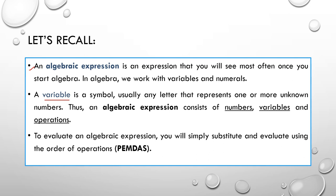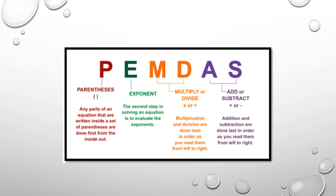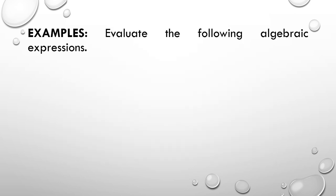What does the acronym PEMDAS mean? P stands for parenthesis, E for exponent, M and D for multiply or divide, A and S for add or subtract. Using that, let us solve the following examples.